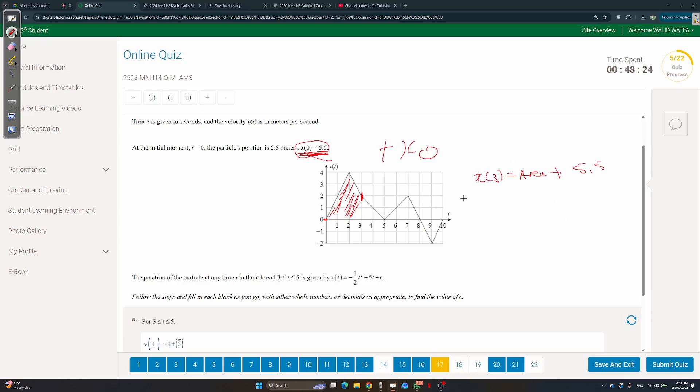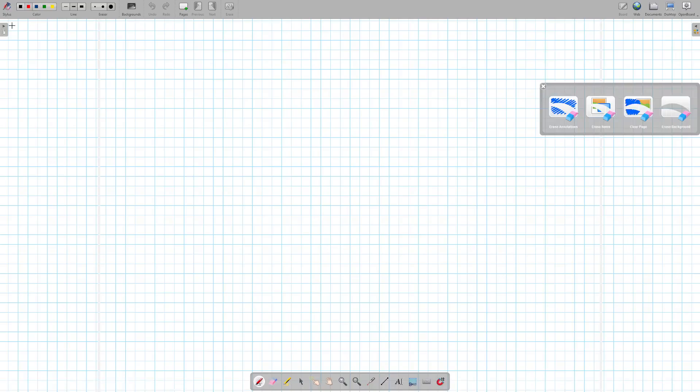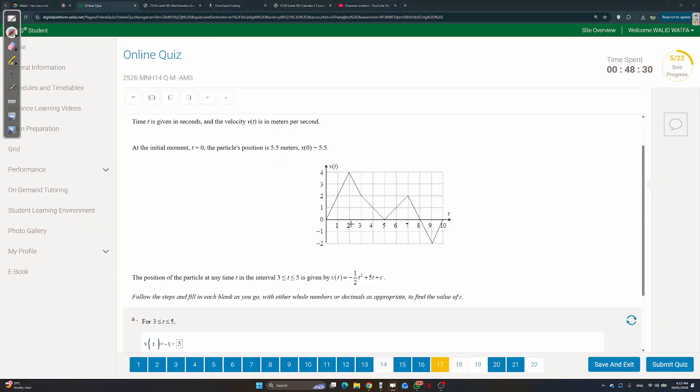So x of 3 is the area plus 5.5. What's the area? We're going to split it up into a triangle over here. The first triangle, the base is 2, the height is 4. So I'm going to put triangle 1. It's bh over 2, so it's 2 times 4 over 2, which is 4.